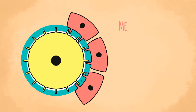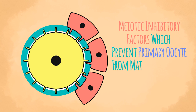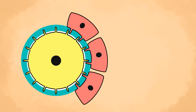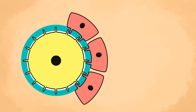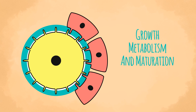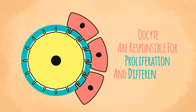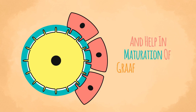Both the oocyte and the surrounding follicular cells are dependent on each other for further development. The follicular cells secrete meiotic inhibitory factors which prevent primary oocytes from maturing beyond the prophase of the first meiotic division. These inhibitory factors are transmitted to the oocyte via gap junctions present between microvilli of the oocyte and follicular cells. Follicular cells are also responsible for growth, metabolism, and maturation of oocytes. In turn, oocytes are responsible for proliferation and differentiation of follicular cells and help in the maturation of Graafian follicles.